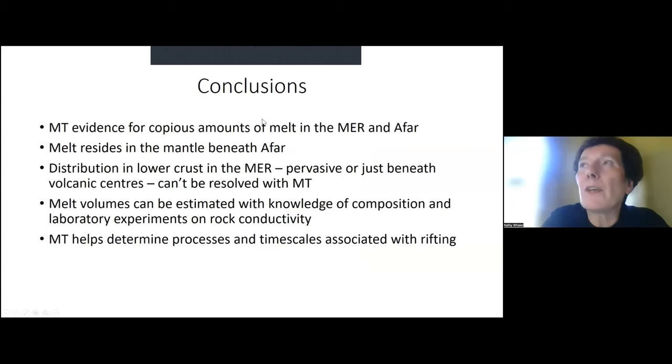So the melt there is not concentrated in these magmatic segments, primarily beneath the rift zone, but seems to be concentrated off to the northwest. And here are some on and off axis conceptual models as published by Edmonds in 2020, with these sort of crystal rich mush here in the axis center caldera and high off axis melt flux to the side here. And that's been related by them to the carbon dioxide emissions that have been also characterized along the rift there. So I should finish. Conclusions, MT evidence for copious amounts of melt in the MER and Afar. Melt resides in the mantle beneath Afar, where it should be too buoyant to hang around. Distribution in the lower crust in the main Ethiopian rift, either pervasive or just beneath the volcanic centers can't be resolved with MT. Melt volumes can be estimated with the knowledge of composition and laboratory experiments on melt conductivity, not rock conductivity. And then MT can help determine the processes and timescales associated with rifting. Thank you.